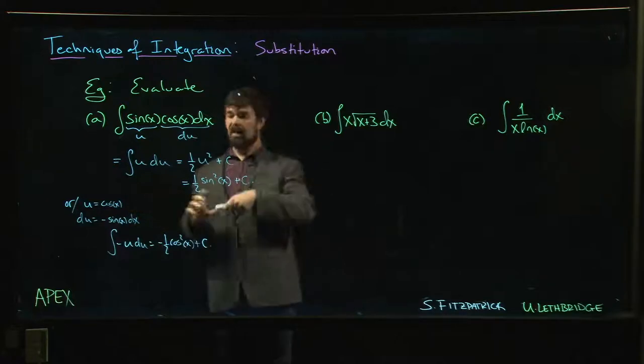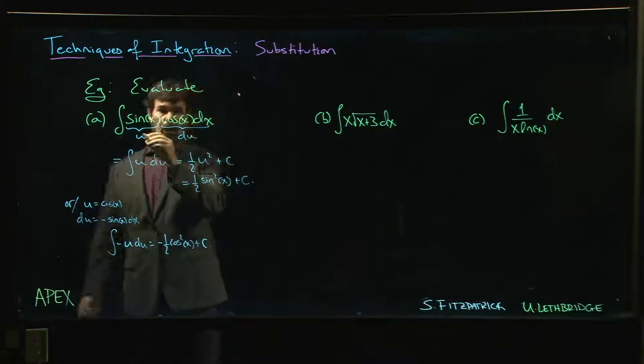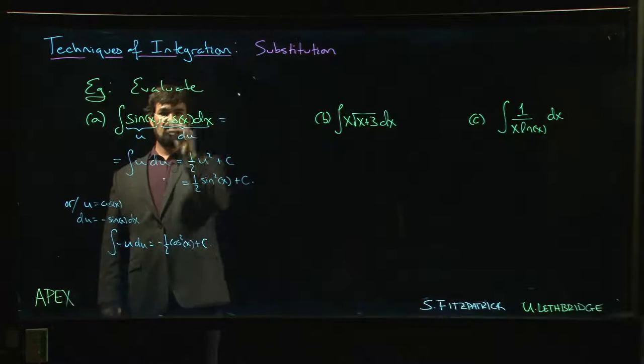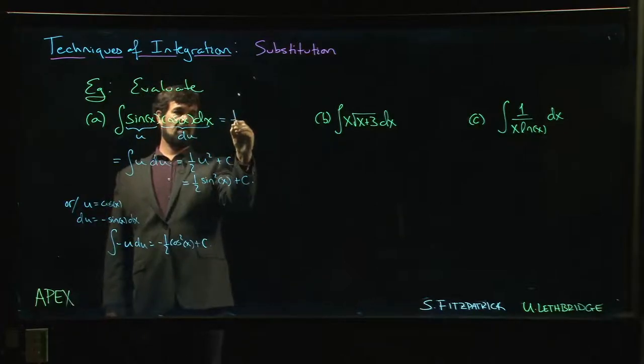In fact, there's one other way you could have tackled this. You could have used a double angle identity and said, oh I remember that sine 2x is 2 sine x cos x.